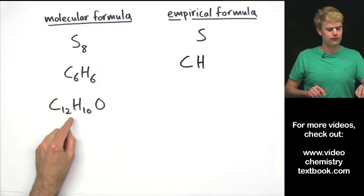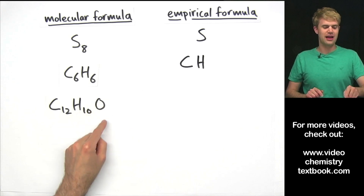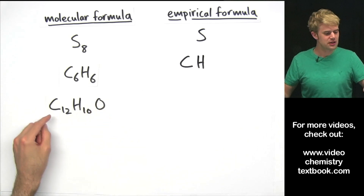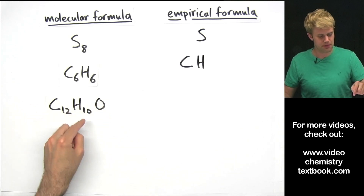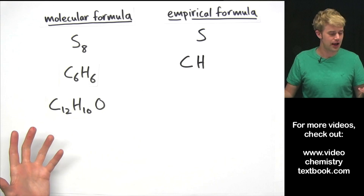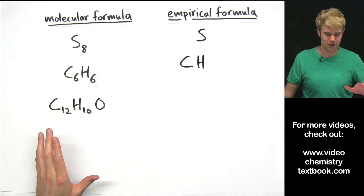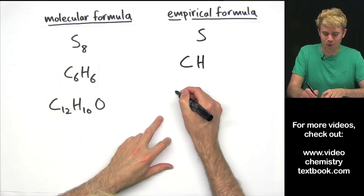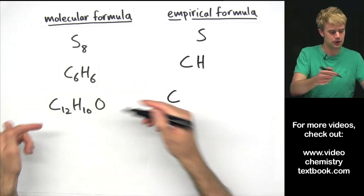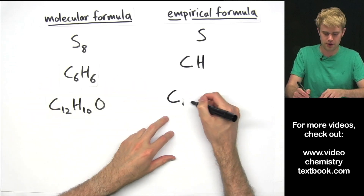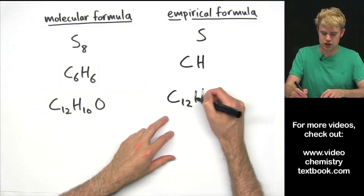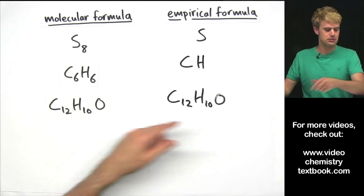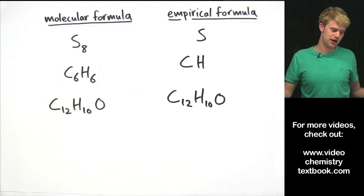C12H10O — there's nothing after the O so it's O1. What can we divide all of these by to simplify it more? There is nothing. Just as we saw before, when you can't further simplify a molecular formula, the empirical formula is just the exact same as the molecular one.